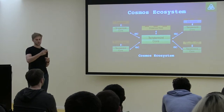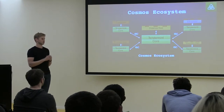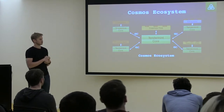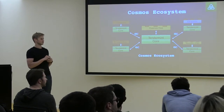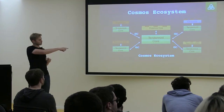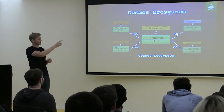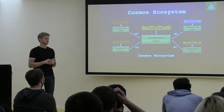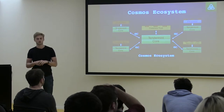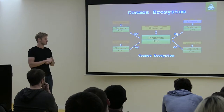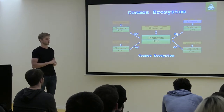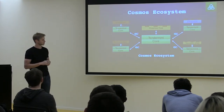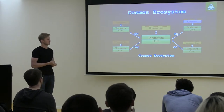In Tendermint you can do very efficient light client proofs. In particular, one blockchain can be a light client of another blockchain — they can both be light clients of each other and thus verify transactions on the other chain. This makes it possible to move tokens from one chain to another, or move data from one chain to another. IBC is actually a fairly simple protocol that enables this network of interconnected blockchains.